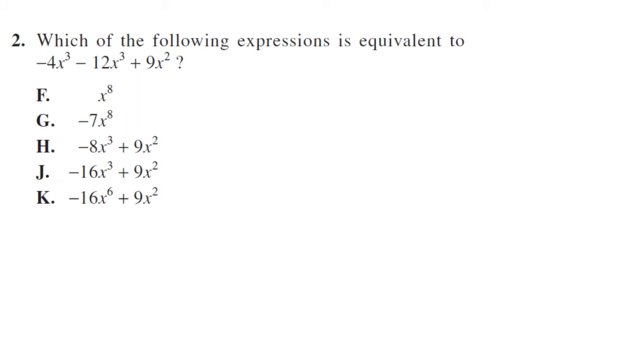Which of the following expressions is equivalent to this term. So we have 9x squared, so it has to be one of these. So we can go ahead and eliminate F and G. And then we've got to combine negative 4x cubed negative 12, so negative 4 negative 12 is negative 16 cubed. So it has to be J. So there's your answer.